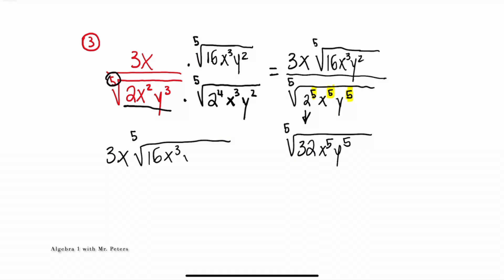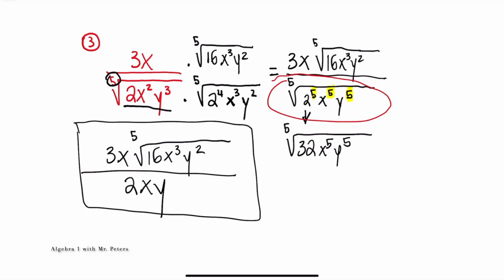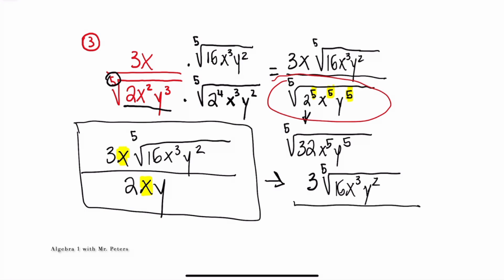In the denominator, things are going to change. The fifth root of 2 to the 5th power — when you divide those exponents — we just get 2. Same thing with x to the 5th and y to the 5th. So now when we look at our answer, this is where we should be at the next step. However, this is not the final answer — we can simplify by dividing out the x. After we divide that x out, the actual final answer is 3 times the fifth root of 16x to the third y squared, all over 2y.